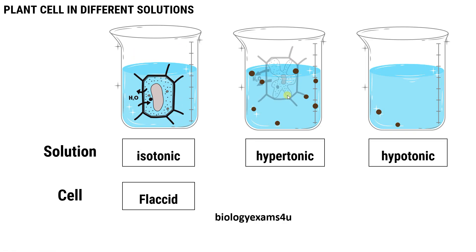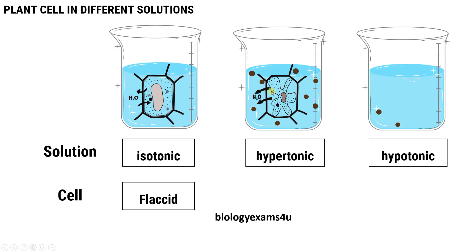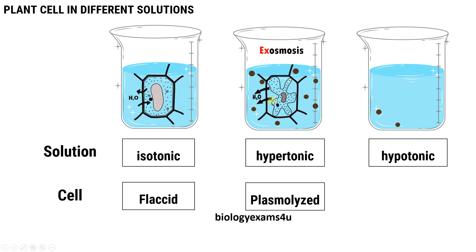Now the plant cell is placed in a hypertonic solution. A hypertonic solution has a high solute concentration compared to the cell, so water moves out of the cell and the cell shrinks. As you can see, the plasma membrane gets detached from the cell wall, and this state is called plasmolysis. The cell gets plasmolyzed in hypertonic solution due to exosmosis — the loss of water from the cell to the outside solution.